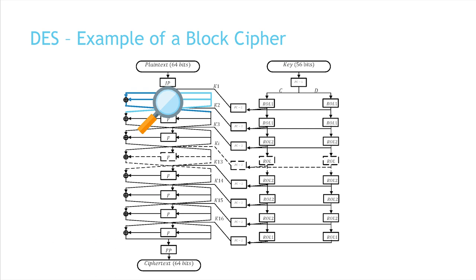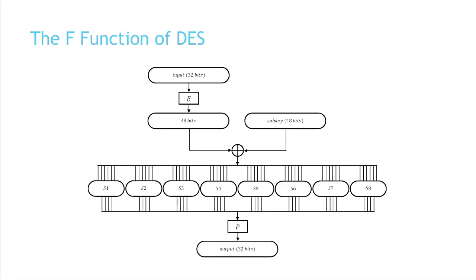Taking a deeper look at the f-function: it expands the 32 input bits to 48 bits, XORs them with the subkey, and transforms the result through 8 S-boxes. Each of the 8 S-boxes transforms 6 input bits to 4 output bits using a non-linear transformation. Then the order of the resulting 32 bits is permuted to produce the 32 output bits of the f-function.